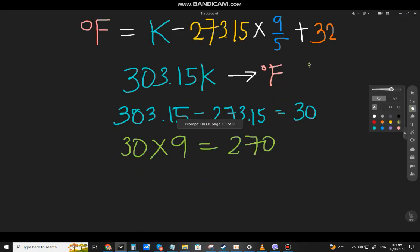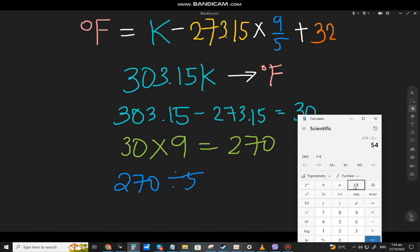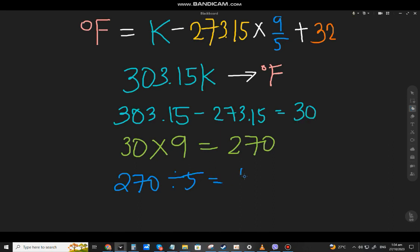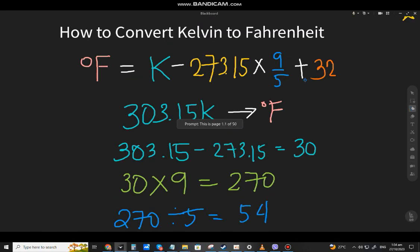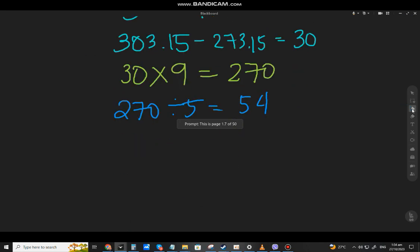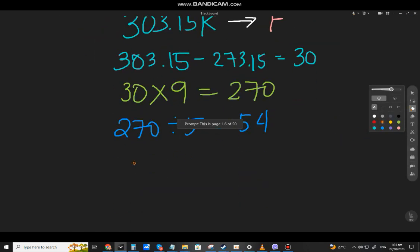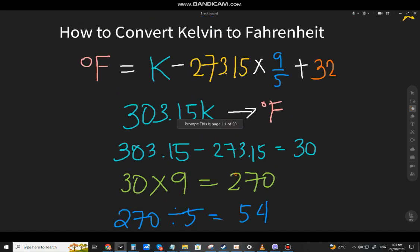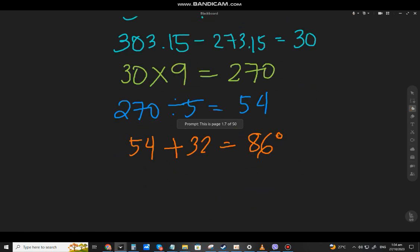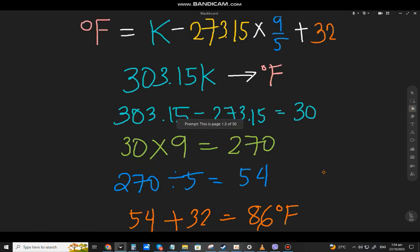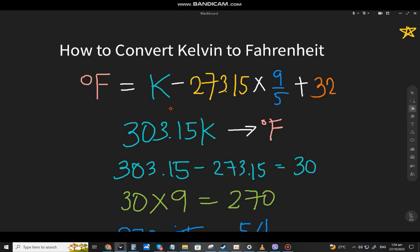Now we divide it by 5, so 270 divided by 5 equals 54. And you will add 32. So 54 plus 32, that will be 86. Add the symbol degrees Fahrenheit.